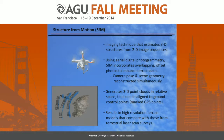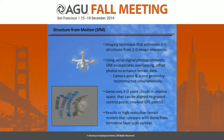Structure-from-motion is an imaging technique that estimates 3D structures from 2D image sequences. It does this by using overlapping, slightly offset aerial images to create and then enhance terrain data. Essentially, it creates relative-space-referenced 3D point clouds or models that can then be ground-truth aligned with ground control points and geo-referenced, creating a geo-referenced high-resolution terrain map or model.